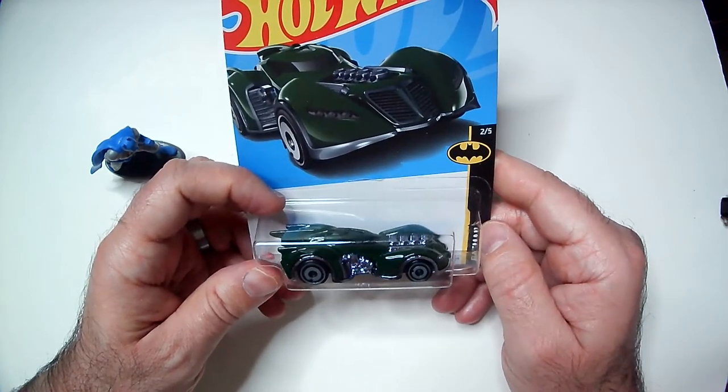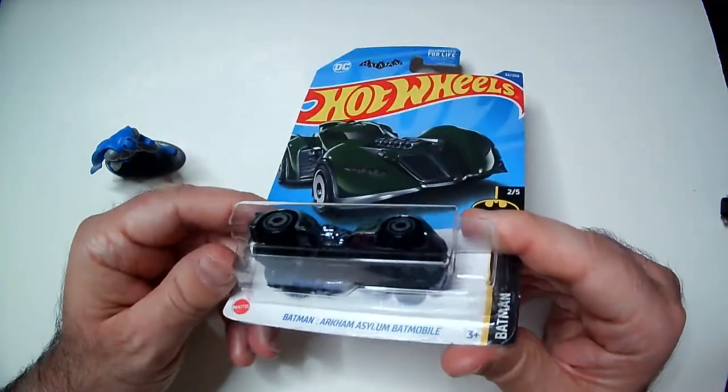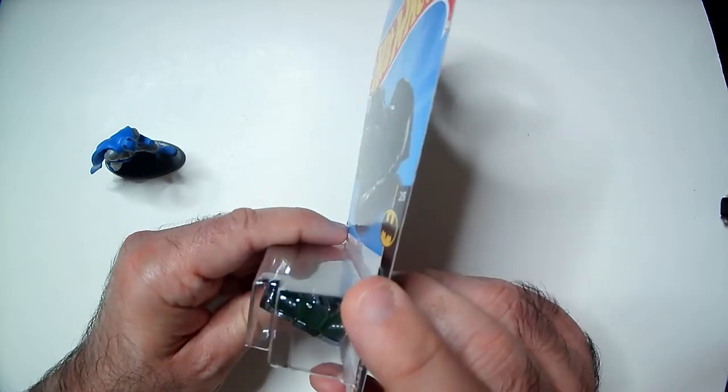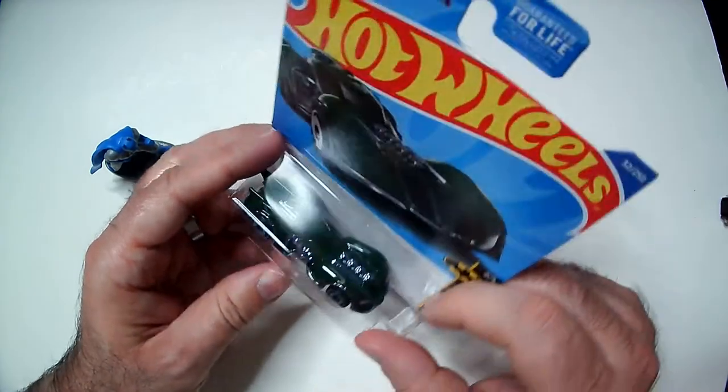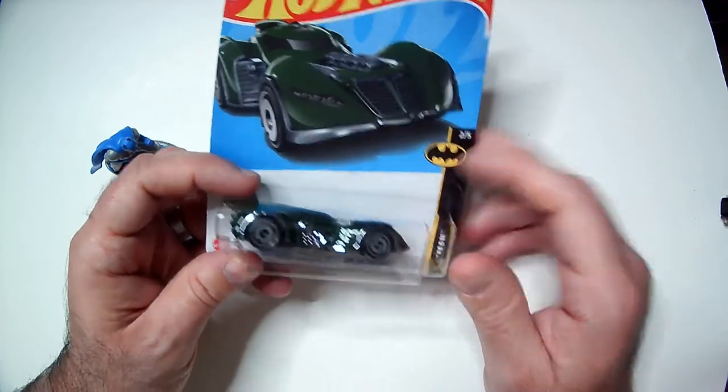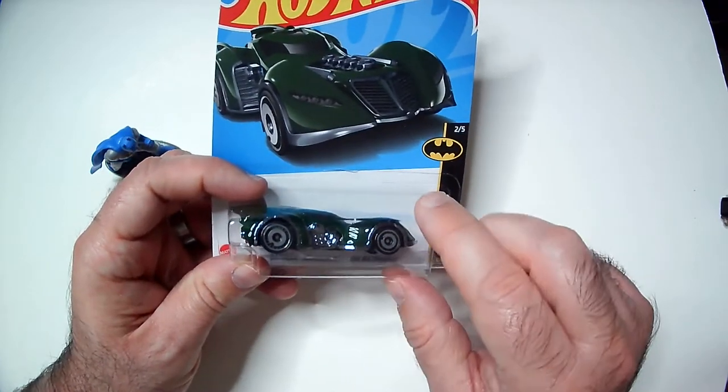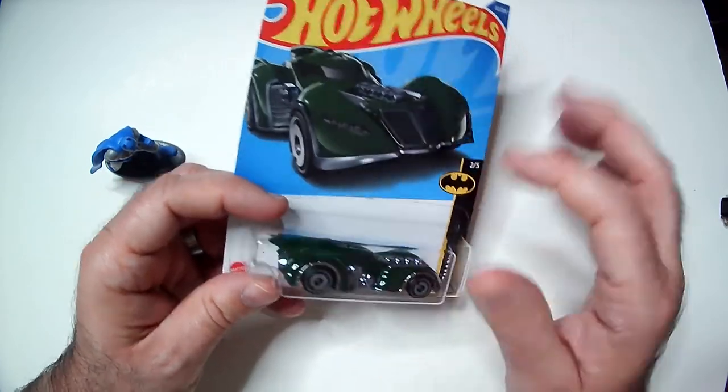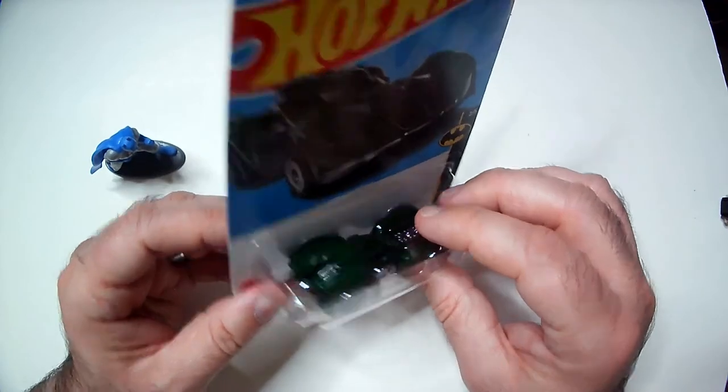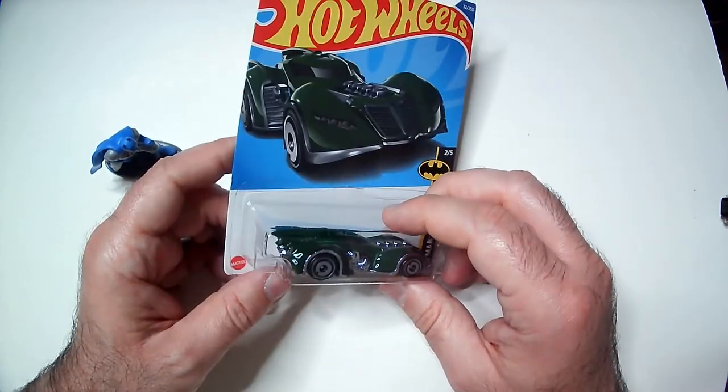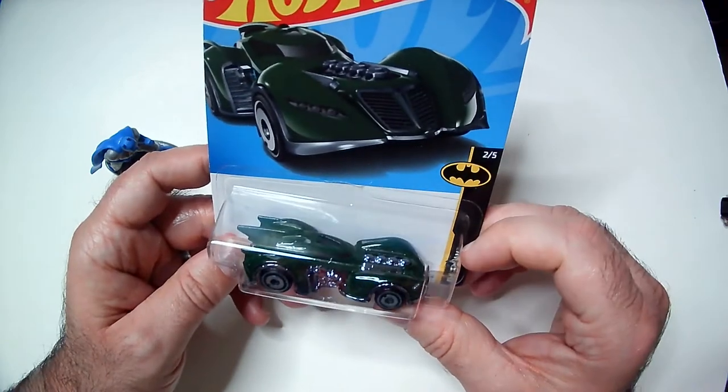But I think this one kind of does shout out Batmobile versus the tactical one that just looks like a tactical vehicle. So kind of cool. Left it on card. I don't know if it comes in other colors or not. This one's green. It probably does. This one's two out of five. I'm not sure if it's the same car in different colors or different vehicles.